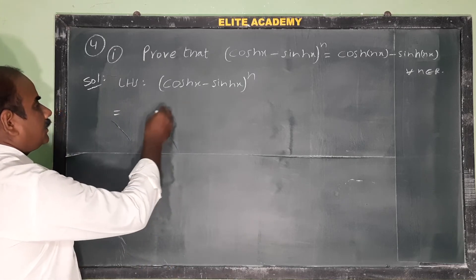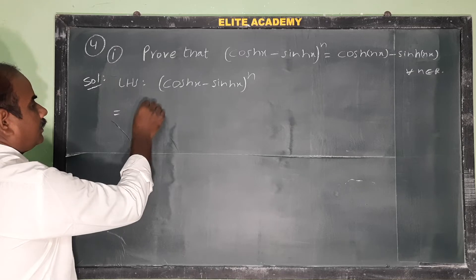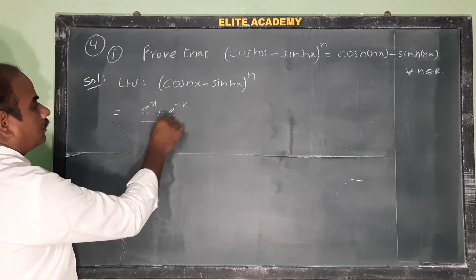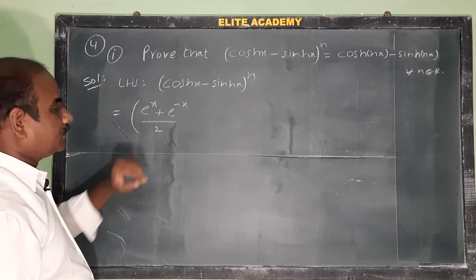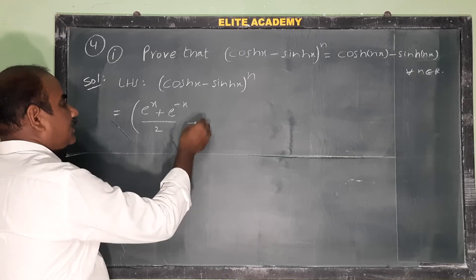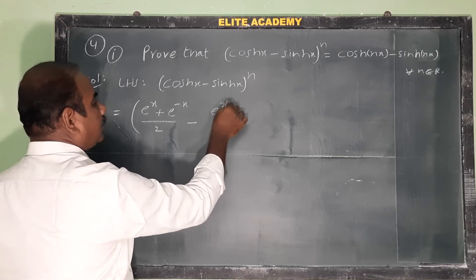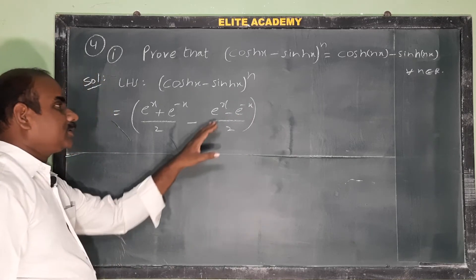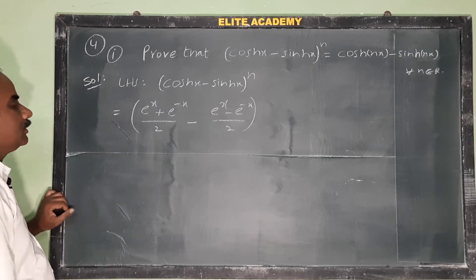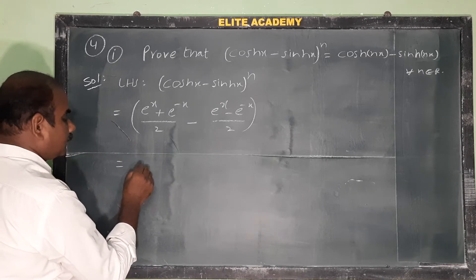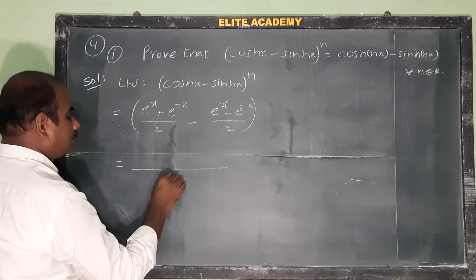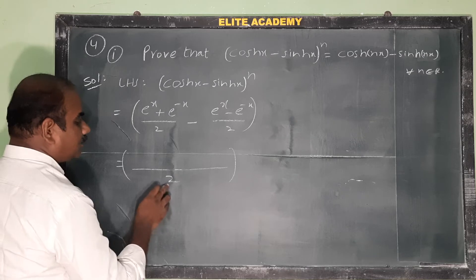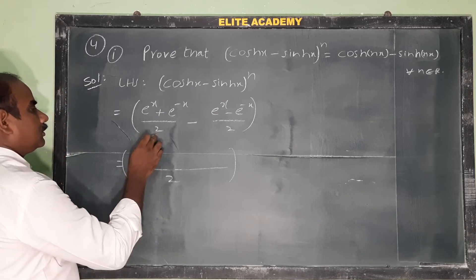Taking LHS first: cosh x means (e^x + e^(-x)) / 2, this is the formula for cosh x. Minus sinh x means (e^x - e^(-x)) / 2, this is the formula for sinh x. Both have the same denominator so take LCM, which is 2.